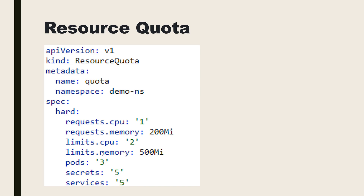If you are not aware of what requests and limits are, you can refer to the previous video. Briefly, requests provide the amount of CPU and memory which has to be provided while creating the pod, while the CPU and memory defined in the limit is the maximum amount a pod can extend its resources to. You can also define the count — the number of pods, secrets, and services.